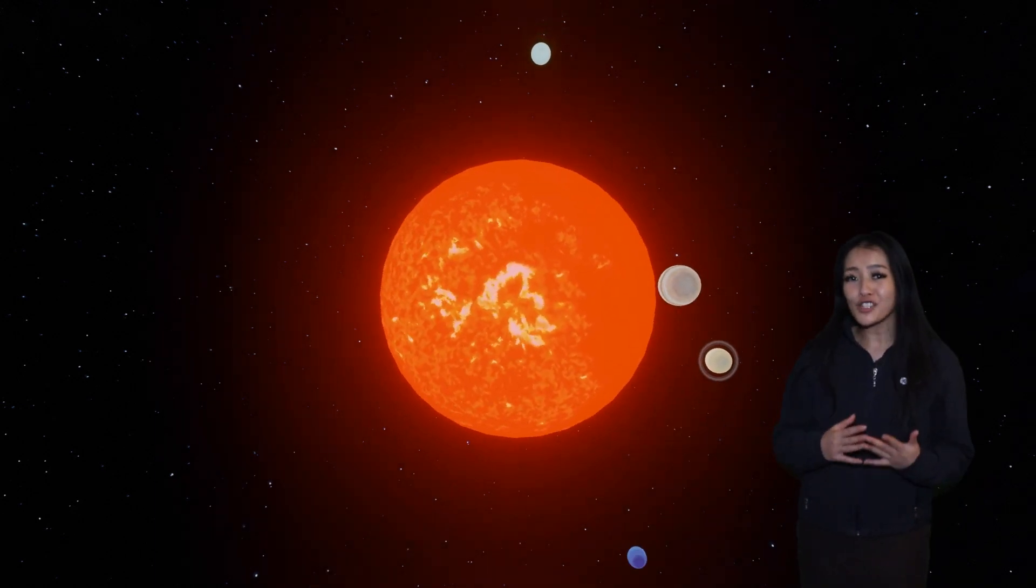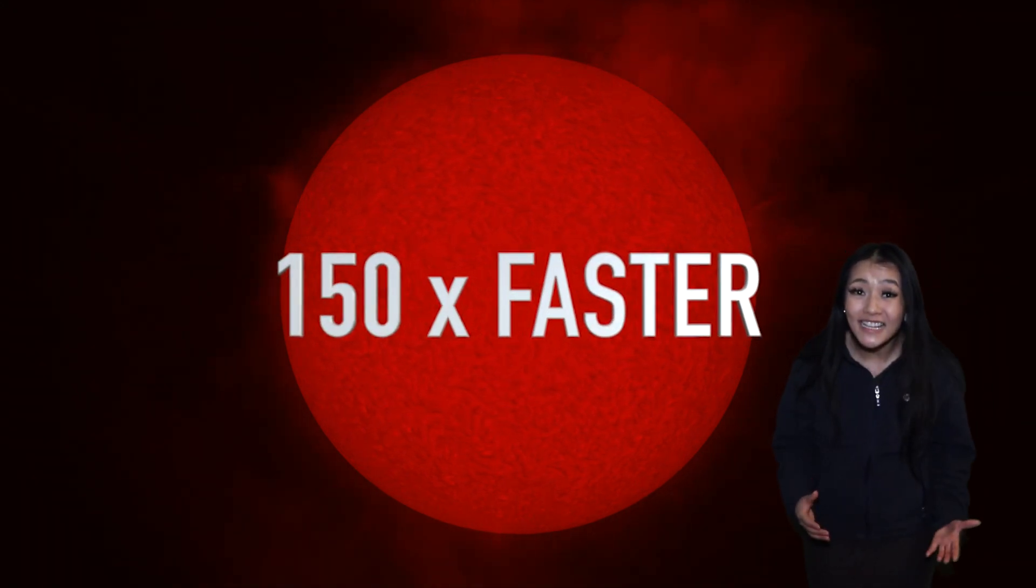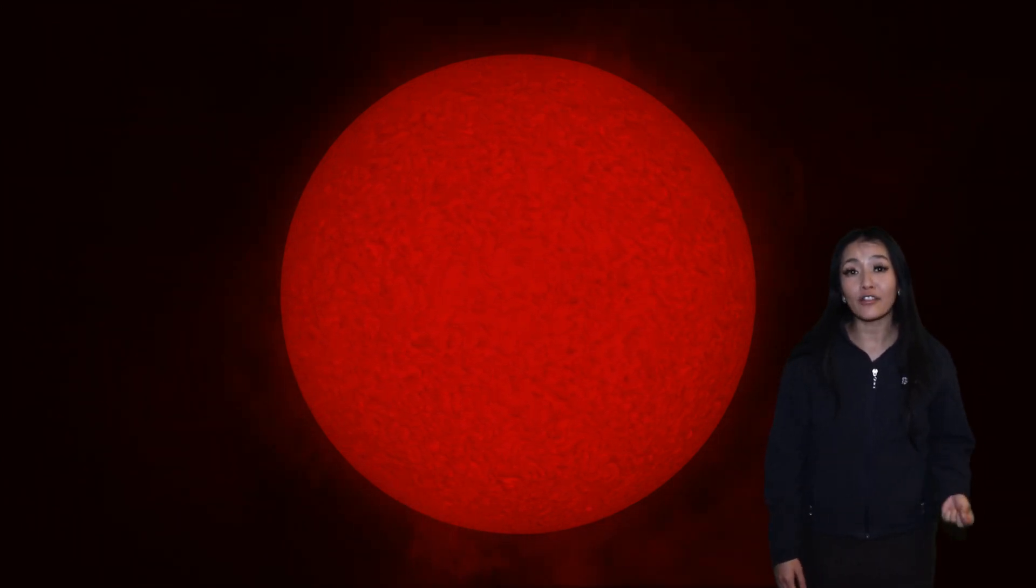Betelgeuse is also kind of strange. It's spinning at 33,500 miles per hour, 150 times faster than it should be given its size, and this has led astronomers to believe that it has swallowed a companion star or object. Despite their size and luminosity, red supergiants are the coldest of supergiant stars, and Betelgeuse is no different. It's just two-thirds the temperature of our Sun.